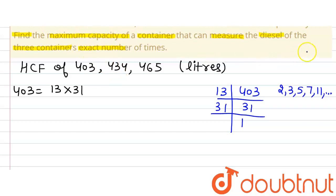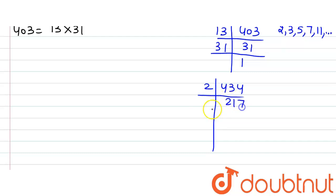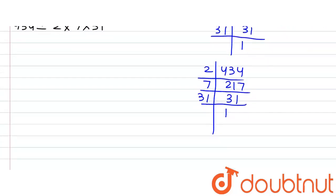Now let's write 434 as a product of its prime factors. 434 is divisible by 2, giving us 217. 217 is not divisible by 2, but it is divisible by 7, giving us 31. Since 31 is a prime number, 434 = 2 × 7 × 31.